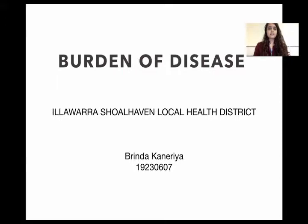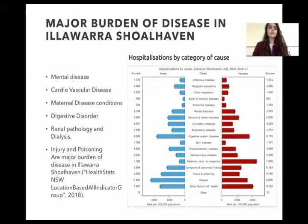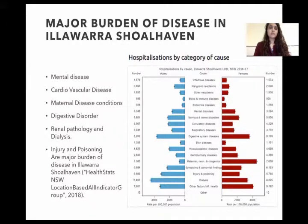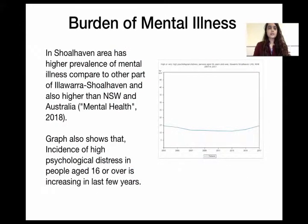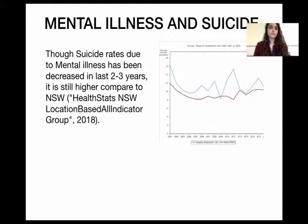I'm Brinda and I'm going to explain the burden of disease in Illawarra Shoalhaven Local Health District. The major burdens of disease in the area are mental health conditions, cardiovascular diseases, maternal illness, digestive disorders, renal pathology and dialysis, nervous disorders, injury and poisoning, and many more, as seen in the graph. The Shoalhaven area has a higher prevalence of mental illness compared to other parts of Illawarra Shoalhaven, and it is also higher than NSW and the rest of Australia.